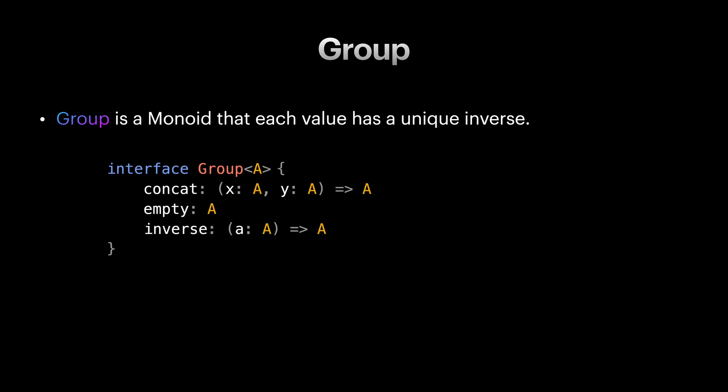Group is an interface that has a closed binary operation over type A called concat which is associative, has an identity value called empty, and an inverse method which maps each value in type A into another value in the same type that is the inverse of it.